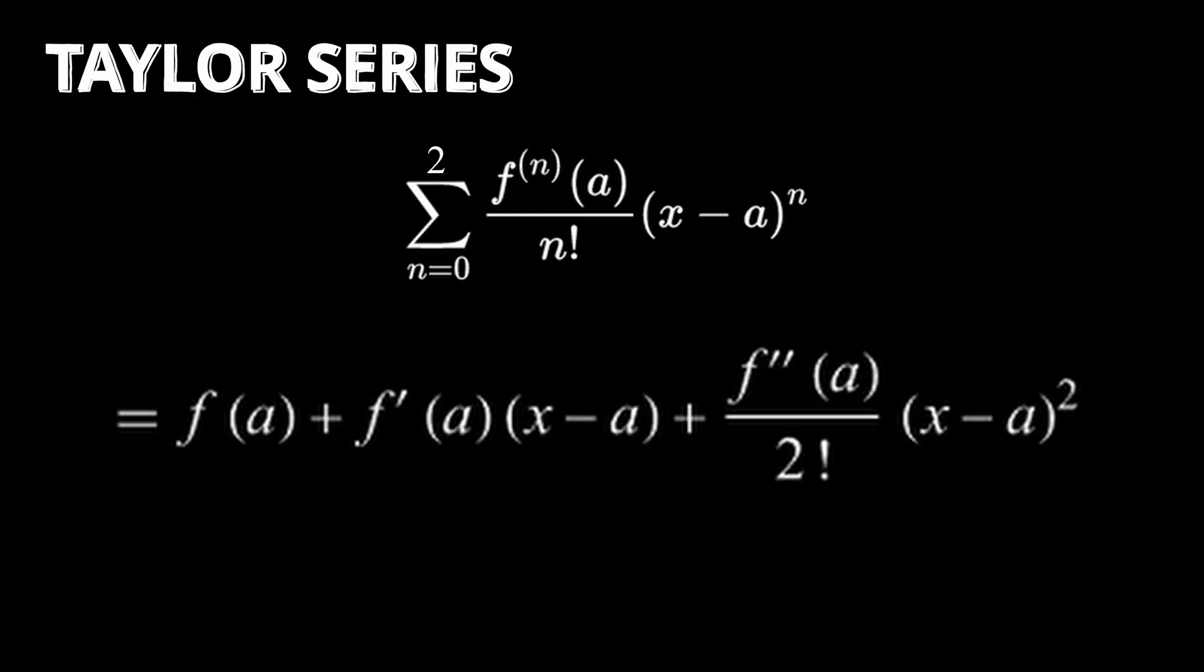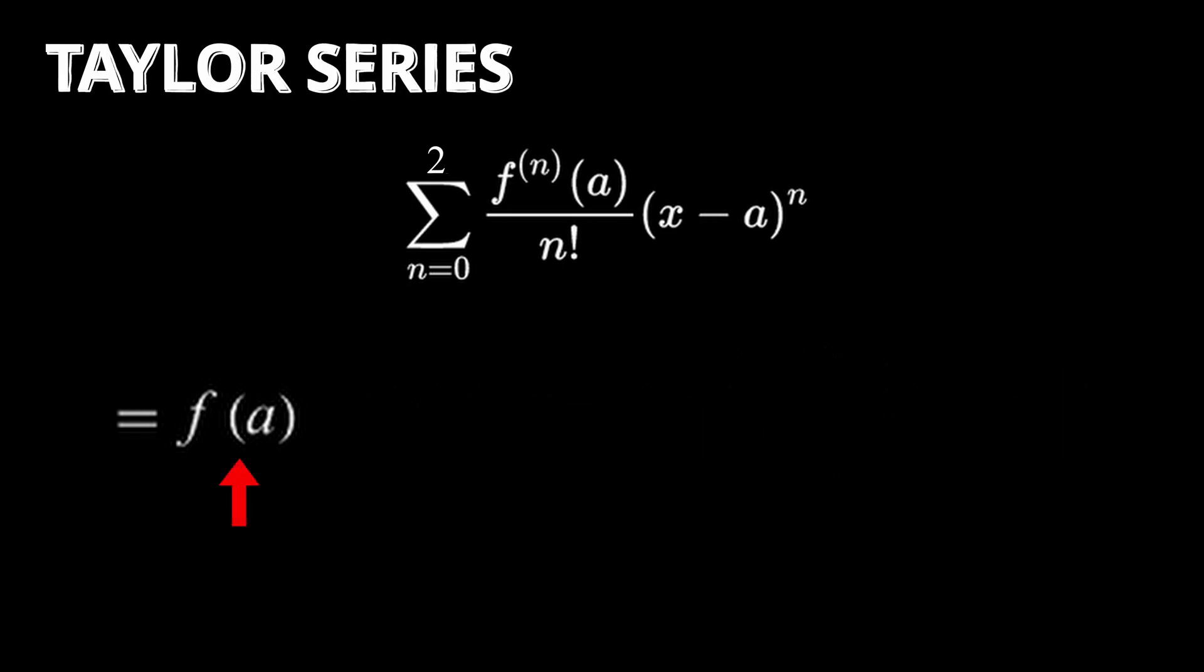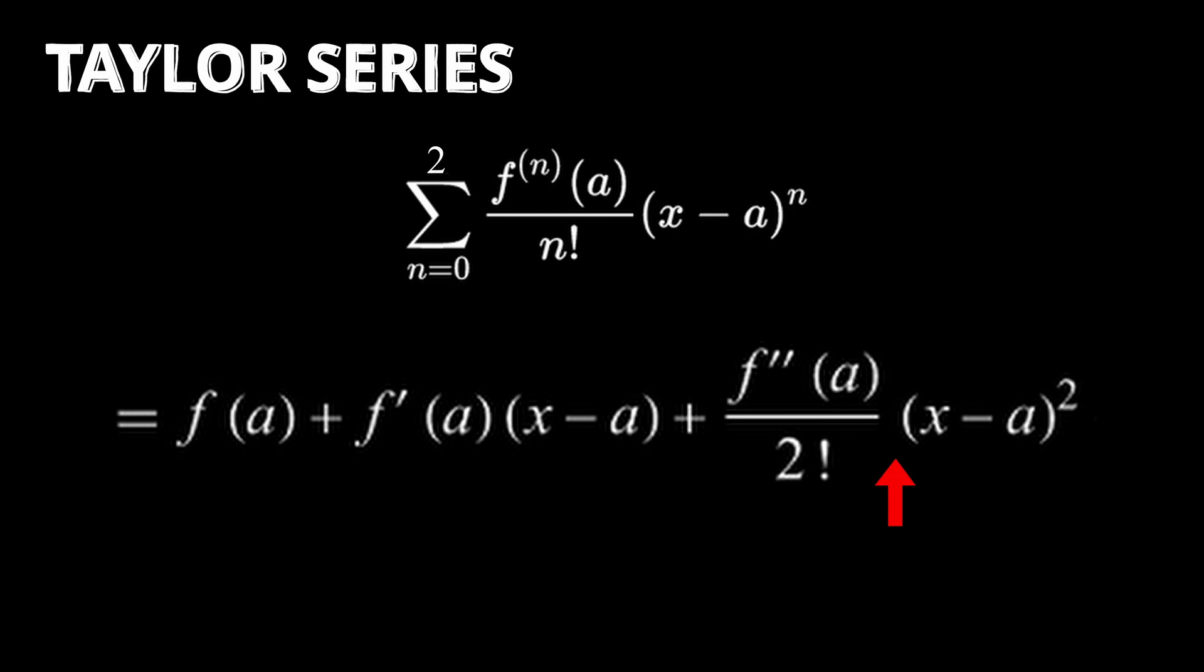Let's follow the pattern in our series. The first term is simply the function f evaluated at a. The next term is the first derivative of f evaluated at a multiplied by x minus a. The last term is the second derivative of f evaluated at a all over 2 factorial multiplied by x minus a squared. We stop here because we chose n equals 2, but you can keep going until infinity.